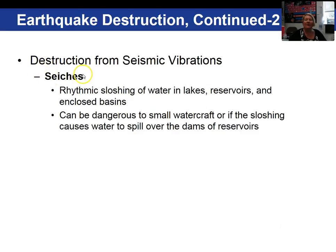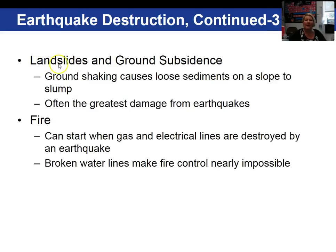A seiche is the rhythmic sloshing of water in a basin like a lake or reservoir, and this can be quite dangerous for small boats and can cause water to overflow the dams of reservoirs. Landslides and ground subsidence are additional destruction that can occur, as well as fires when gas and electrical lines are destroyed.